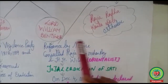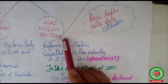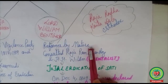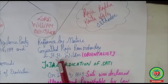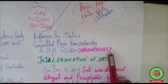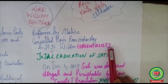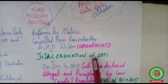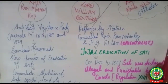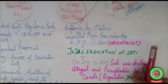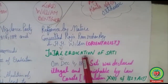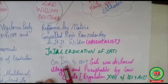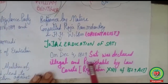The second person was Lord William Bentinck, the Governor General of India. A reformer by nature, he consulted Raja Ram Mohan Roy and H.H. Wilson, who was an orientalist — a person from a western country who studies the history and culture of eastern countries. While Raja Ram Mohan Roy believed in a slow process of eradication, Lord William Bentinck believed in total eradication of sati. On December 4, 1829, sati was declared illegal and punishable by law.